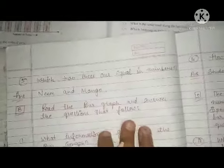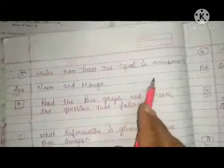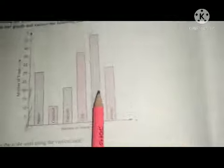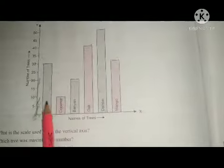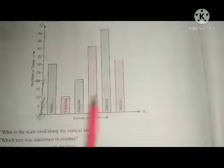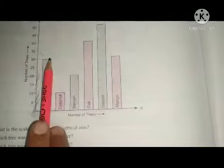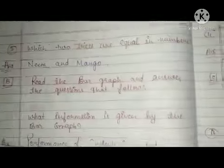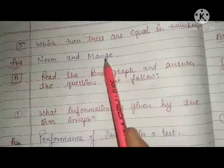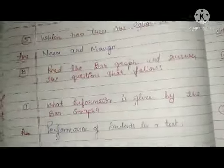The next question is: which two trees are equal in number? The answer is neem and mango — these two trees are equal in number.